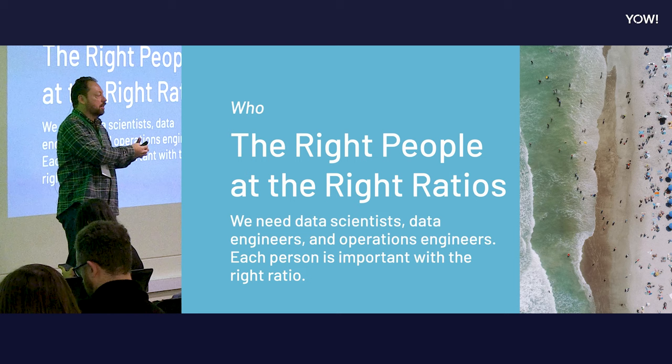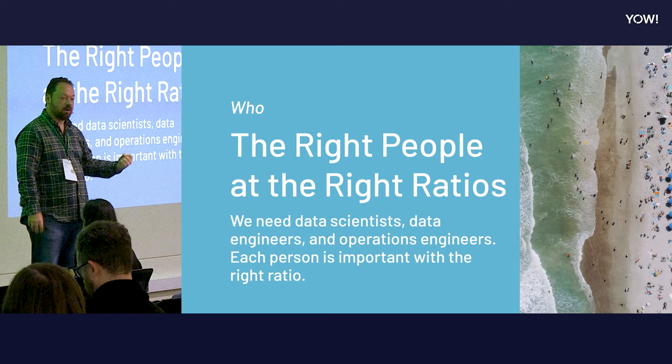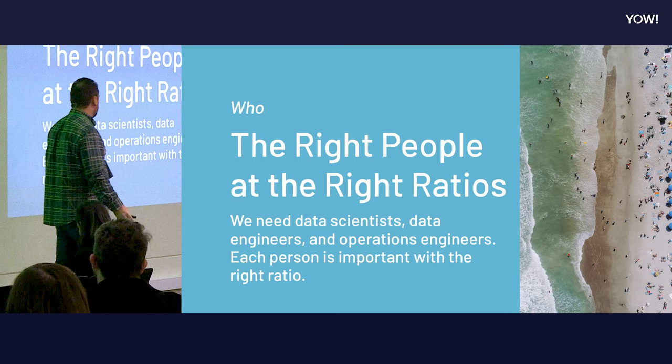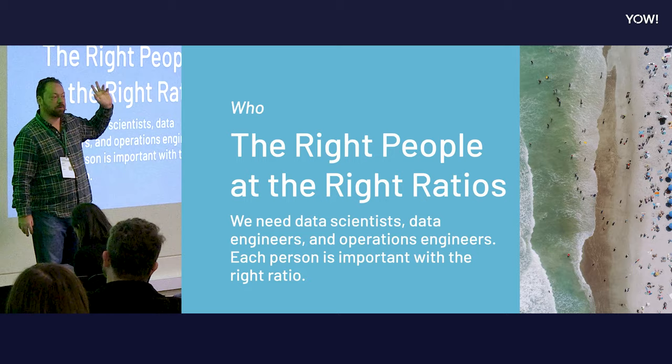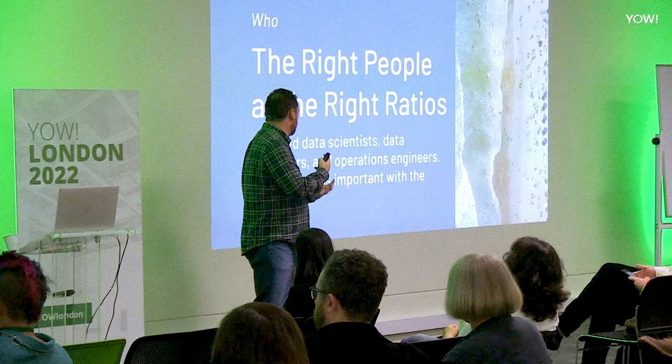If we reverse that and say our data engineers should do data science — that's not what they're supposed to be doing either. Their skills are much more around software engineering; they don't have the math background. We also need our operations people to keep this thing running. We need all three groups in the right ratio.